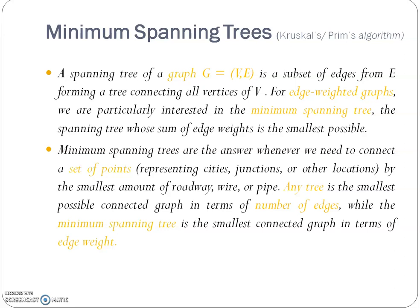In regard with this, the concept of minimum spanning tree — also called Prim's algorithm or Kruskal's algorithm — is where the spanning tree is a representation of a graph having a set of edges from E forming a tree connecting all vertices of V. For a weighted graph, we are particularly interested in the minimum spanning tree, where the sum of the edge weights is the smallest possible.